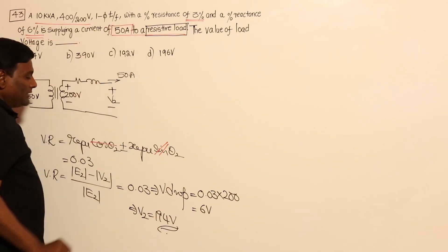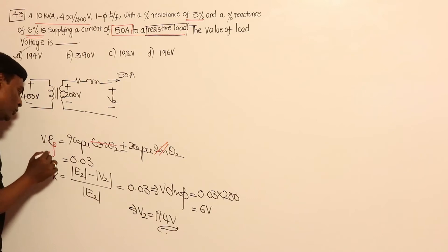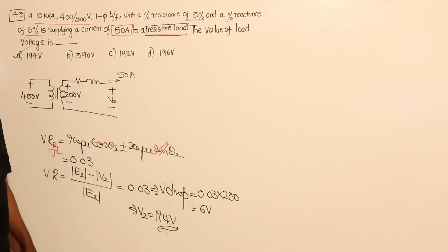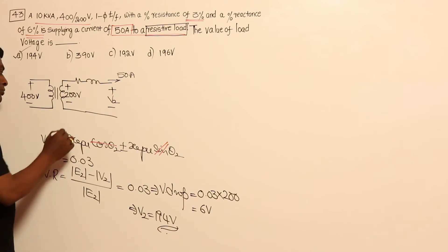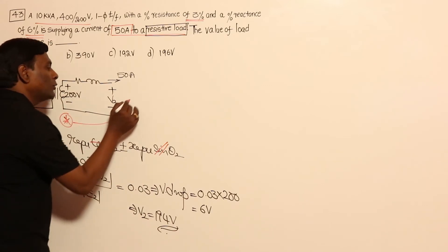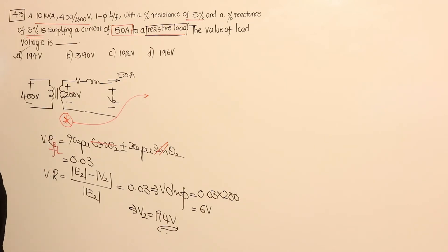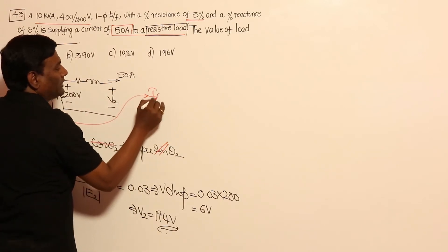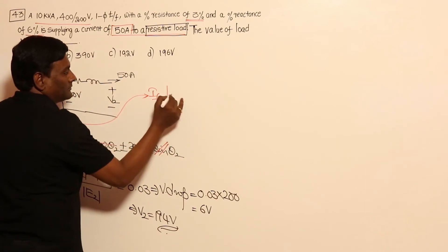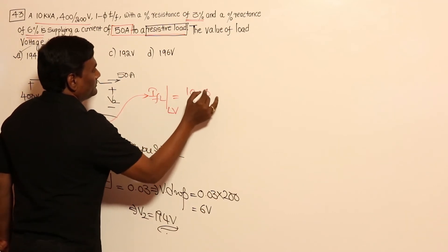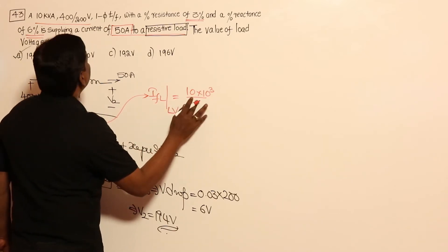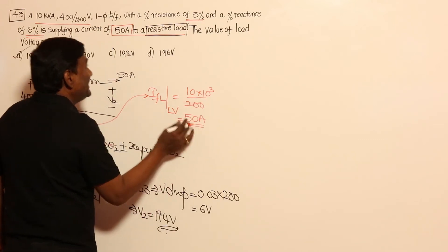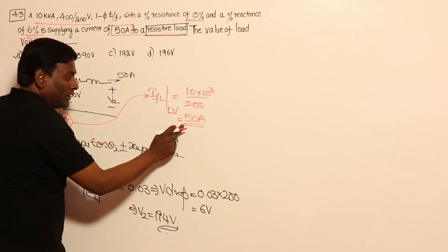The problem states 50 amperes, but this voltage regulation equation should only be used for full load. If the load is 1/n times full load, I have to multiply by 1/n. I did not first check whether 50 amperes corresponds to full load. Before proceeding, we must verify this. Full load current on the LV side = 10,000 / 200 = 50 amperes — so coincidentally, this problem is at full load.